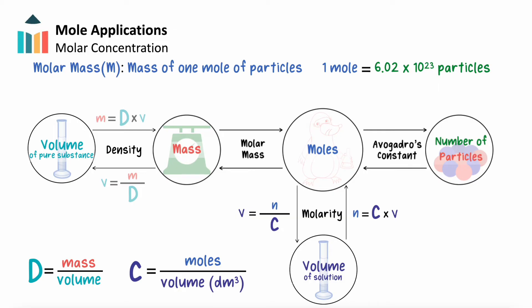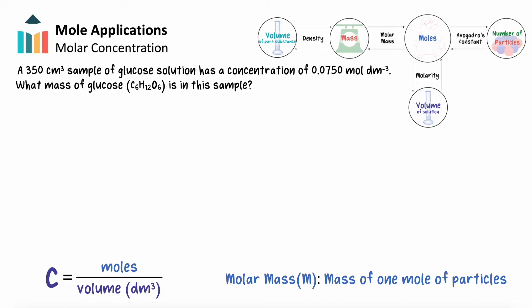Let's take a look at a problem that involves an aqueous solution in which it's necessary to determine the number of moles, and explain why we can't use density in that calculation. A 350 centimeter cubed sample of glucose solution has a concentration of 0.0750 moles per decimeter cubed. What is the mass of glucose in this sample?